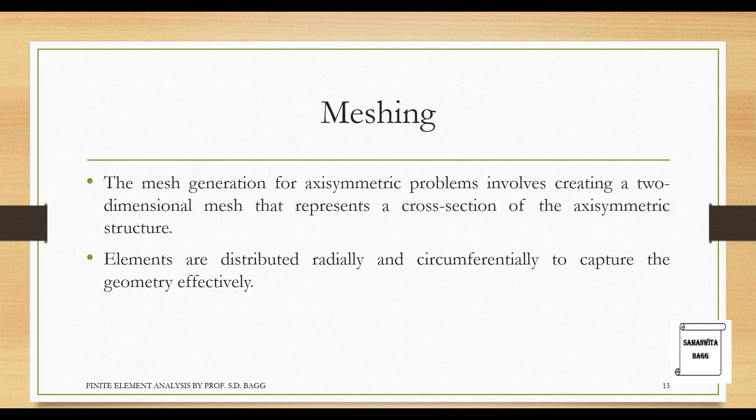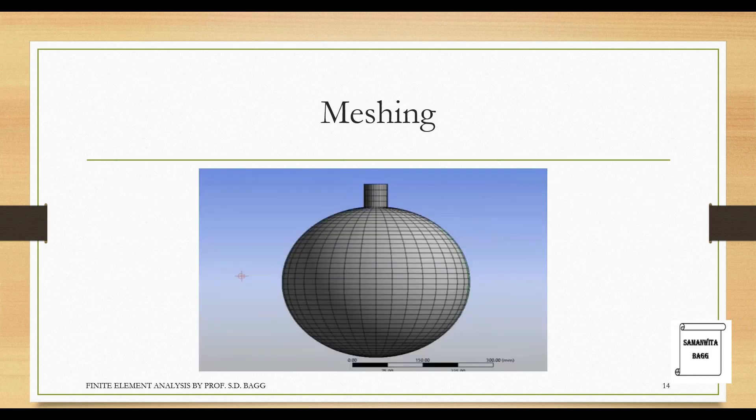Then comes meshing. The mesh generation for axisymmetric problems involves creating a two-dimensional mesh that represents a cross section of the axisymmetric structure. Elements are distributed radially and circumferentially to capture the geometry effectively. I've shown here how meshing is done—it covers both radial and circumferential elements and creates a mesh covering your entire body. You can specify any element size to get finer meshes and better results.